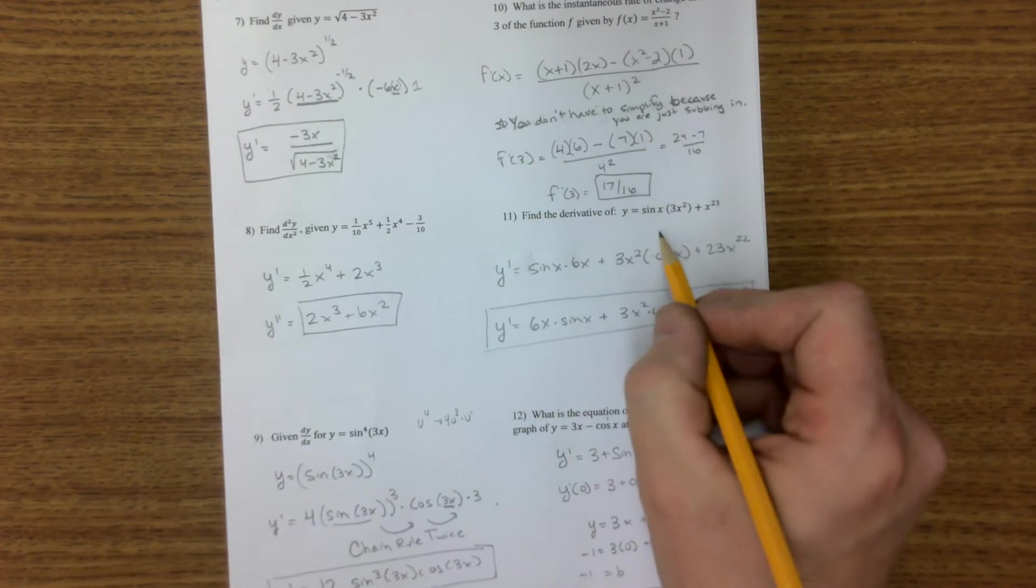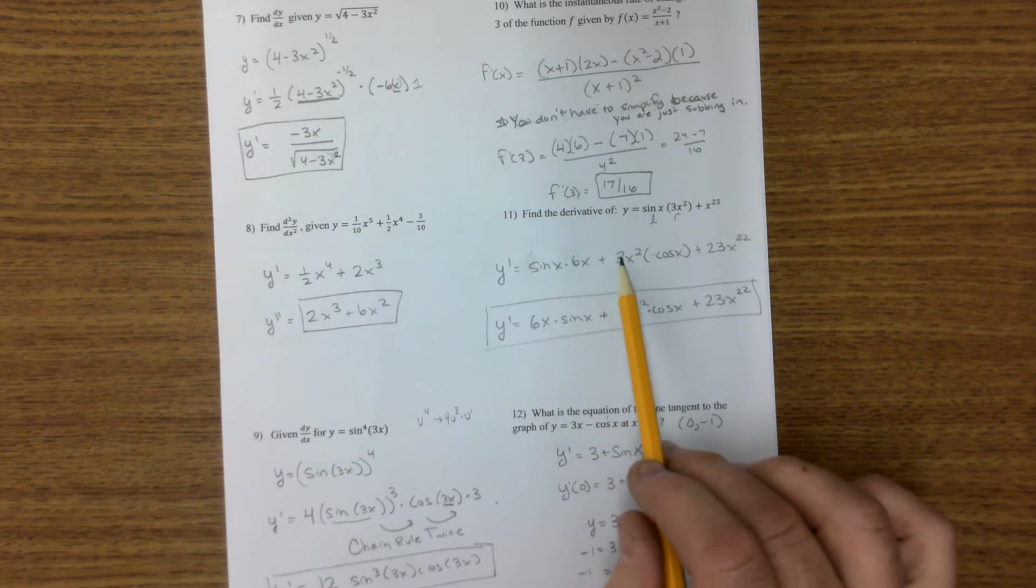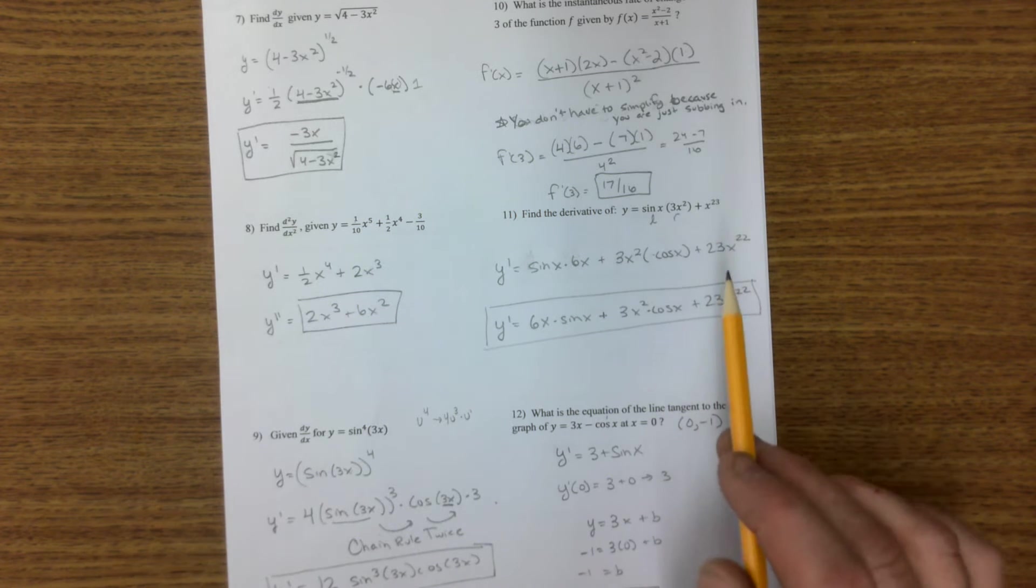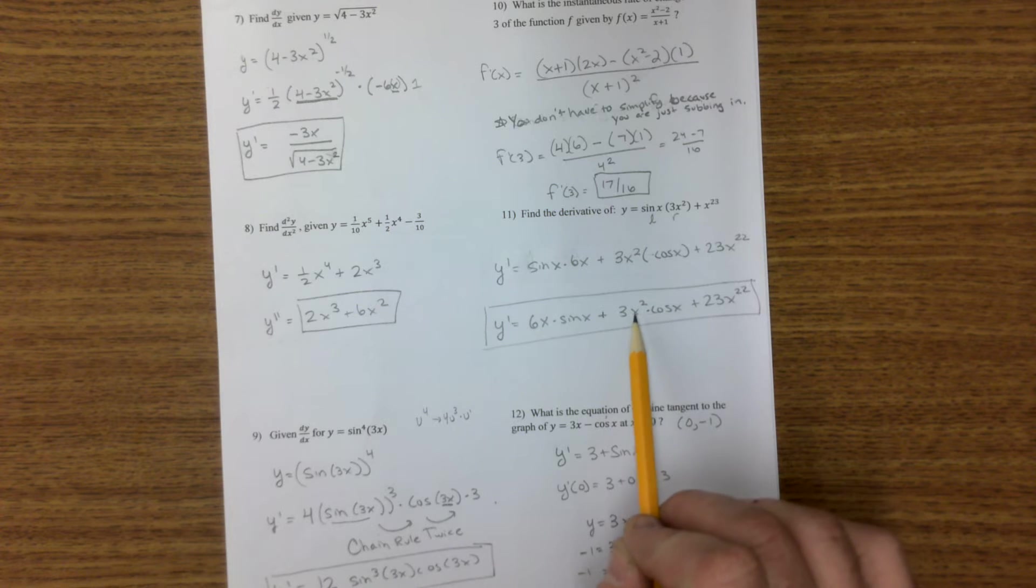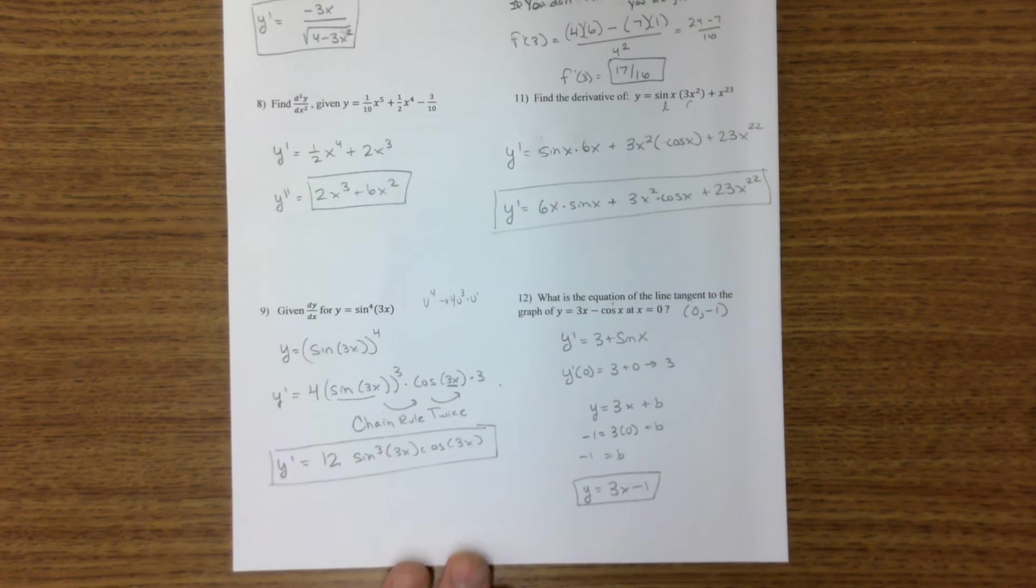The first derivative, this is the left function. This is the right function. Left d right plus right d left. And this guy is separate out here. And usually, we put the letters in front of the trig functions. Not always, but a lot of times you'll see it that way, so I rewrote it.